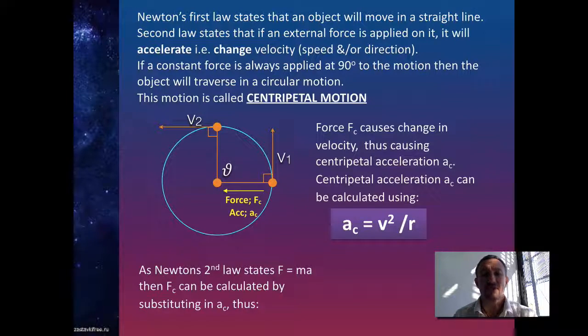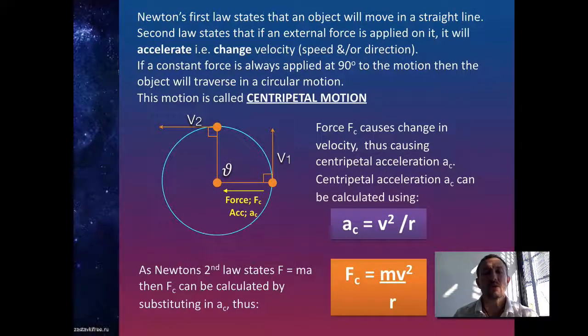So instead of A, we will put AC, which is the acceleration due to centripetal force. And the result is we can work out the centripetal force using MV squared over R, where V squared over R was the centripetal acceleration. So these are our two major formulas which we can utilise.